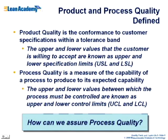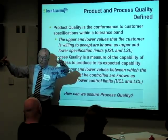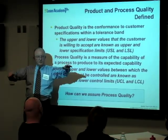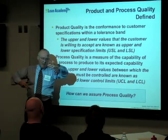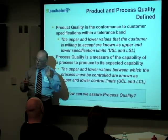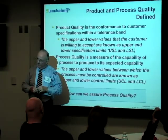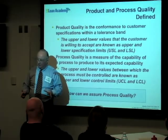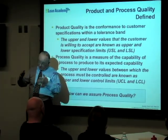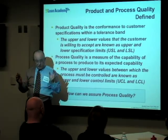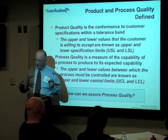We're talking about conformance to spec and to our tolerance band for acceptable quality. Machine parts might have a tolerance of plus or minus 15 thousandths — that's a normal tolerance band. We're going to talk about process capability.